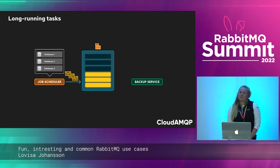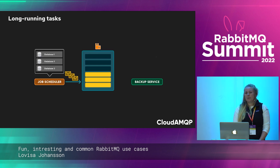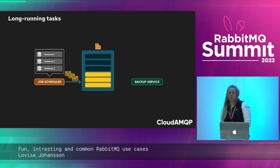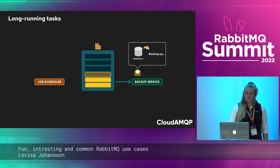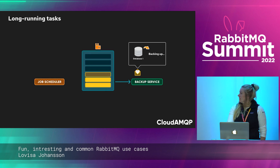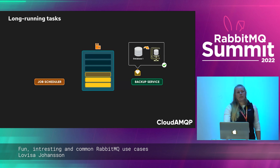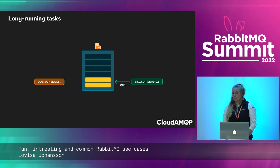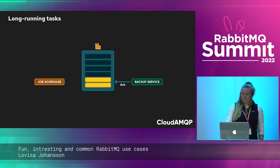A RabbitMQ use case that I like a lot is the way we back up databases at CloudAMQP. We perform daily backups on thousands of databases. This is a long-running, intense process that takes time, especially for some huge databases. One request per database is published to the message queue. The queue holds onto a message until the database backup service has completed the request and acknowledged the completed task, at which point the message is removed from the queue.